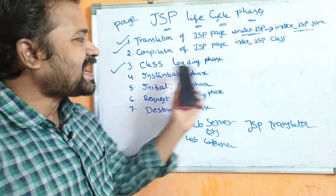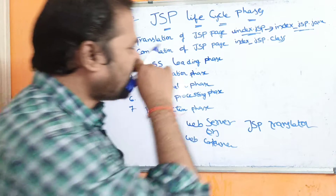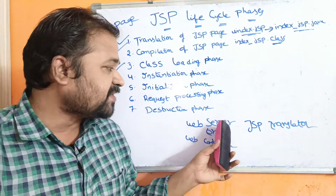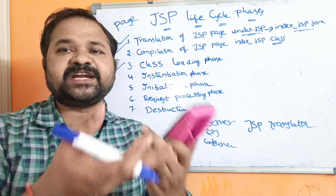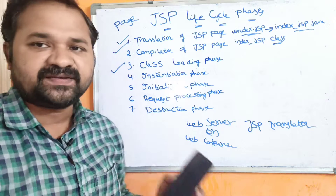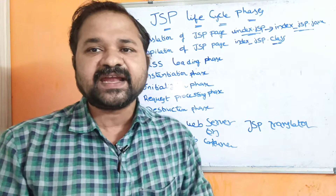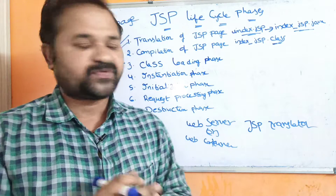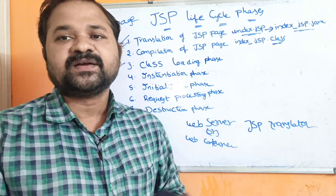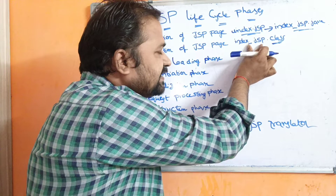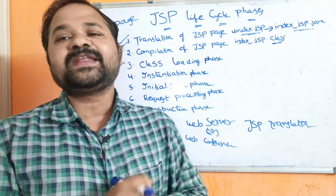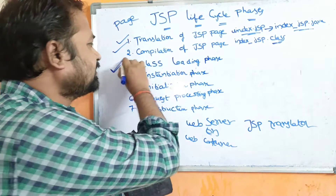The next phase is the Class Loading phase. Once the class file is generated, whenever we start the web server — for example, Apache Tomcat — the web server loads the corresponding class file into the main memory dynamically at the time of execution. So Tomcat loads Index_JSP.class into the main memory dynamically.